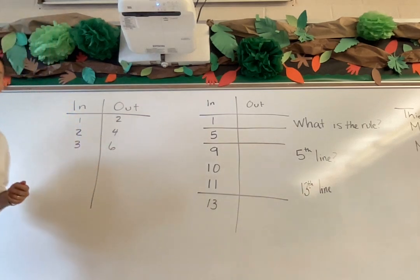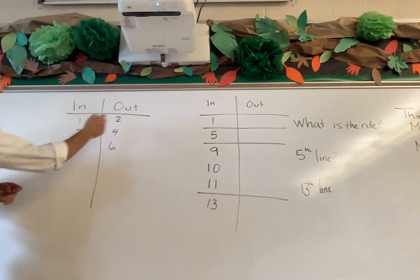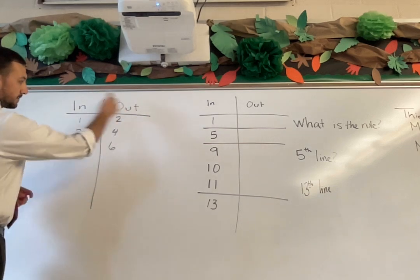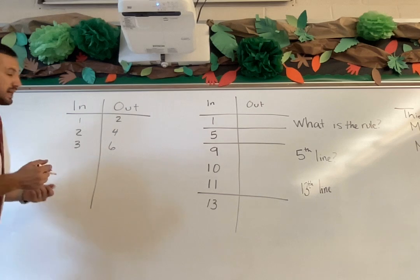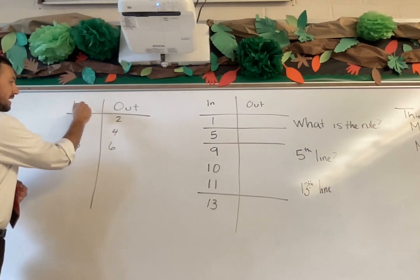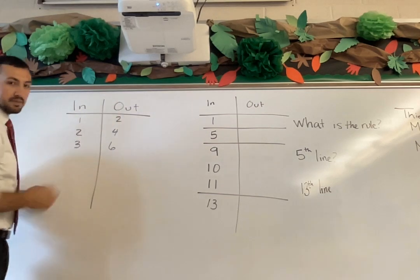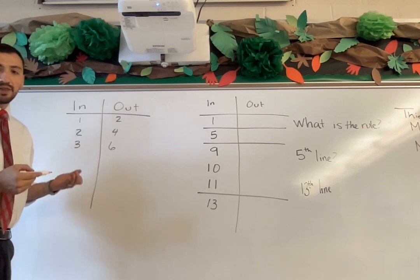especially in unit two. So previously, the kids have been seeing ratio tables that look like this one right here. Basically, all a ratio table is, is you put a number in and then a number comes out.